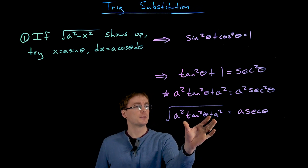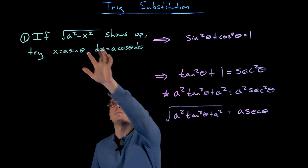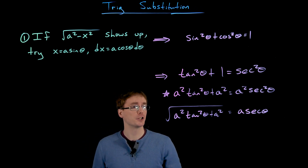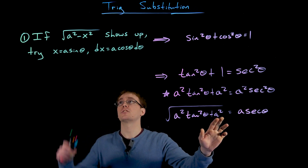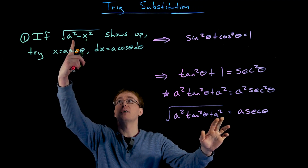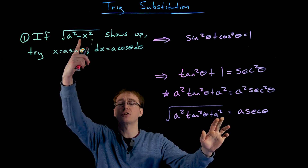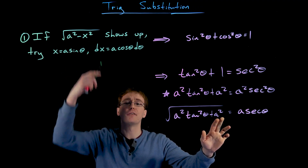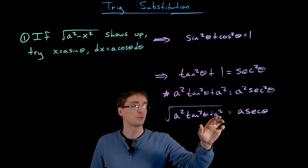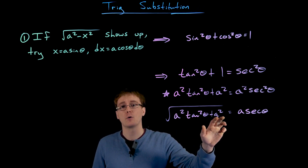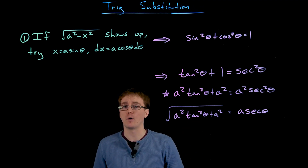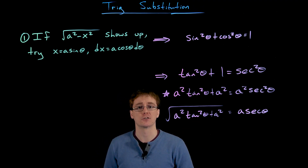What's the difference between this expression and the first expression for our sine substitution? In the sine substitution, we are subtracting some variable quantity squared from our constant squared. In this case we're not subtracting — we're adding a variable quantity squared to our constant squared.